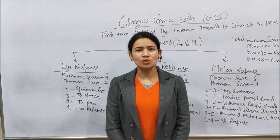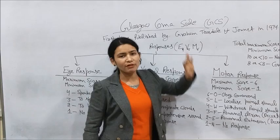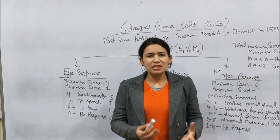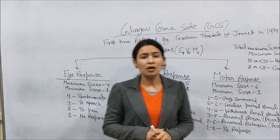Today I am going to teach you about the Glasgow Coma Scale. The Glasgow Coma Scale was first published by Graham Teasdale and Jennett in 1974. This scale is used to assess the consciousness impairment of the patient — basically, we use it to check the awareness of the patient.